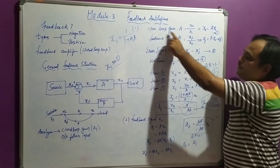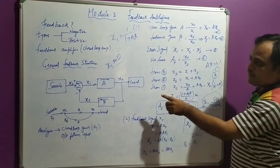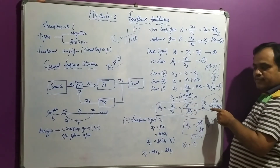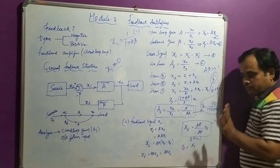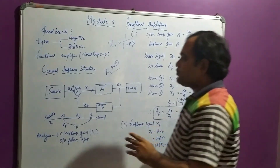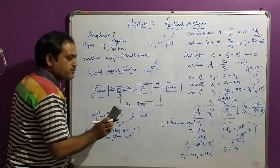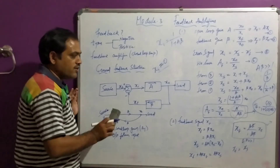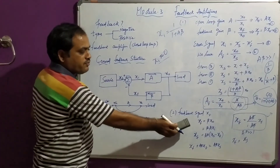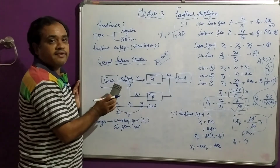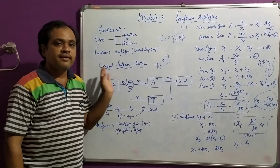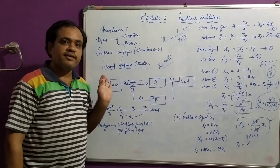To summarize two things we proved: first, the closed loop gain AF equals A divided by (1 plus A·beta), and when A·beta is far greater than 1, it is approximately 1 divided by beta and is independent of the open loop gain. Second, by using feedback, output follows the input — that is the effect of negative feedback on the system. This concludes the discussion of the general feedback structure. In the next section, we will discuss the properties of negative feedback. Thank you.